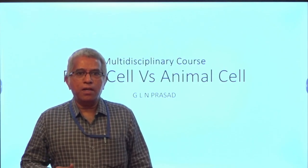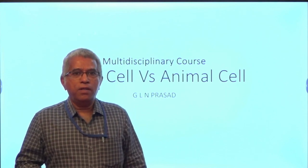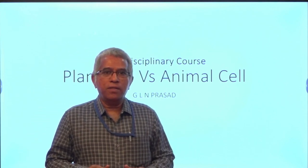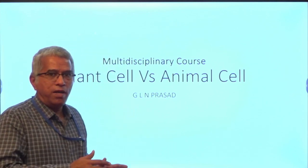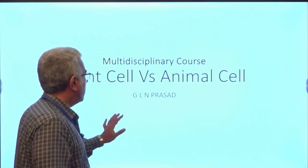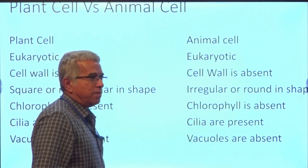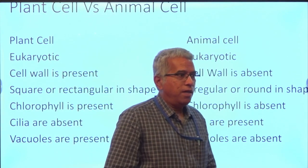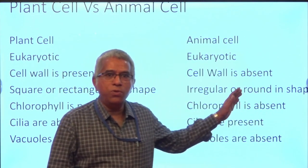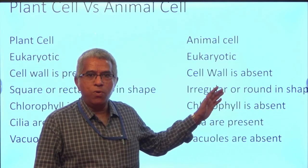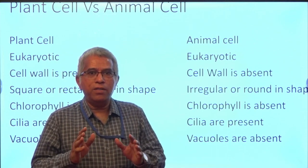Let us try to learn one more topic under the multi-disciplinary course. The topic is the differences between plant cells and animal cells. Here you can see the list of characters of plant cells and animal cells. Plant cells are eukaryotic and animal cells are also eukaryotic — that means both plant cells and animal cells are eukaryotic because they contain a definite nucleus surrounded by a nuclear membrane.